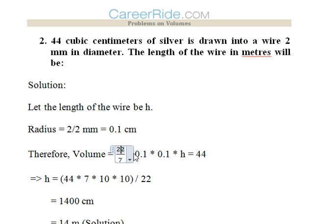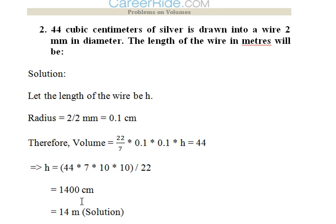Now the volume's formula is pi r² h. We have got the volume 44, got the r 0.1 into 0.1. We need to find out the h, the length of the wire. So the h can easily be found out. So 1,400 cm that means 14 meter. This would be the answer.